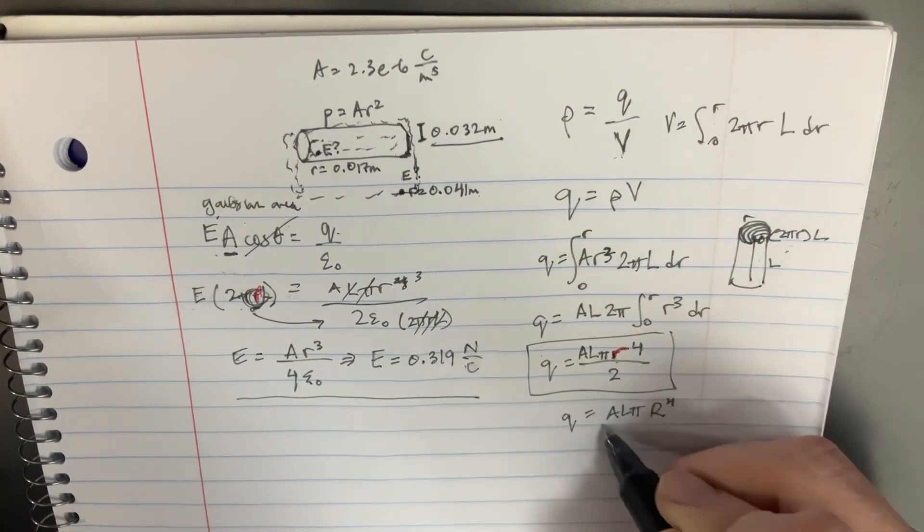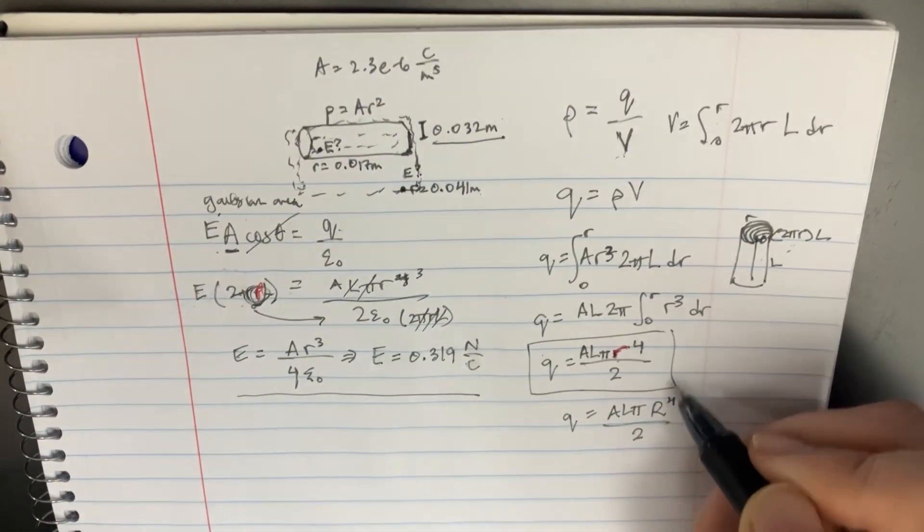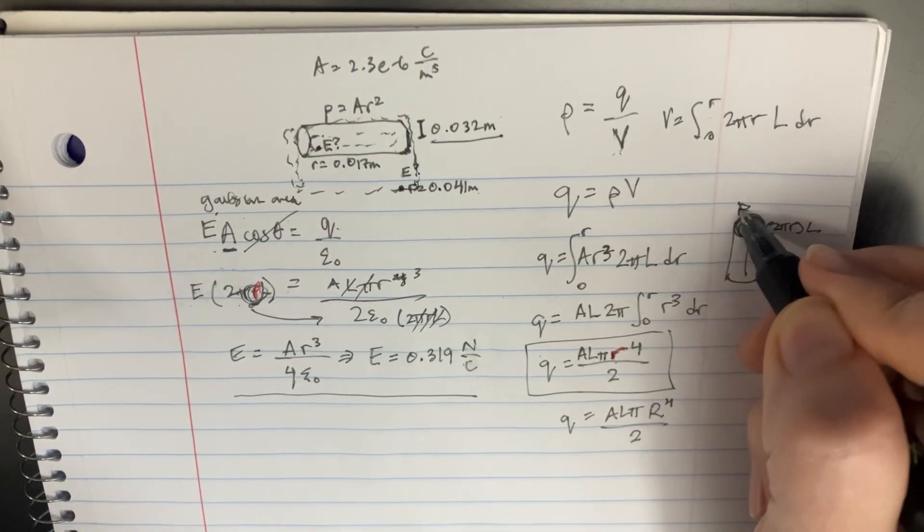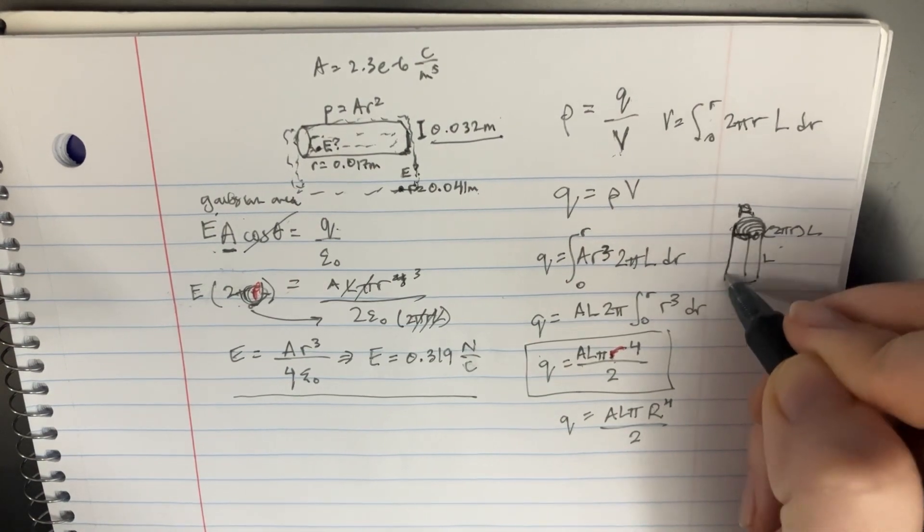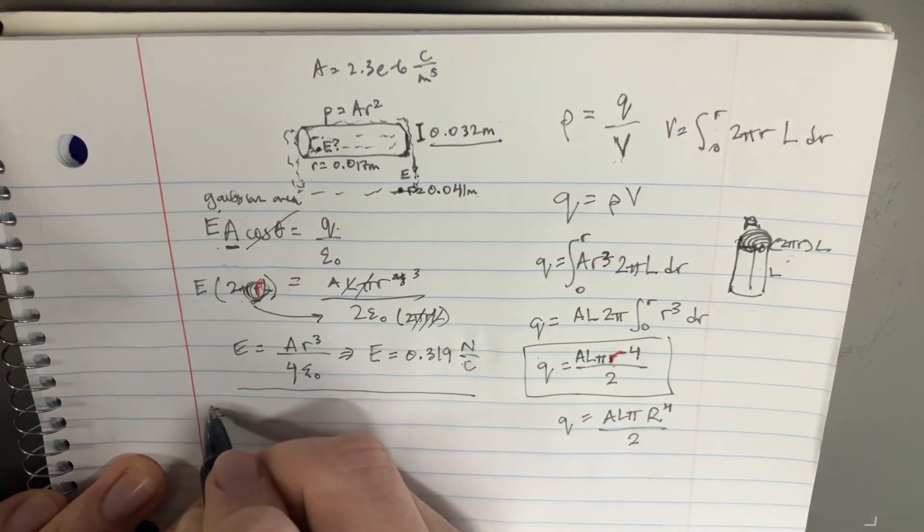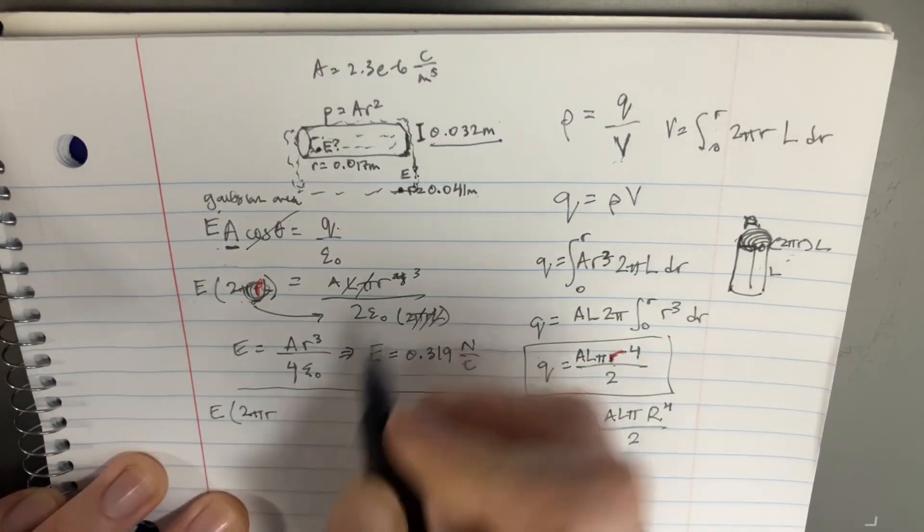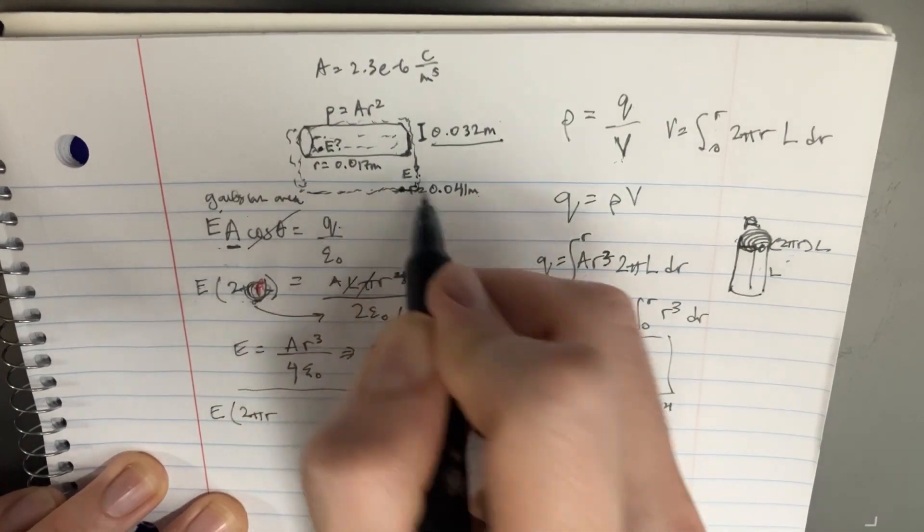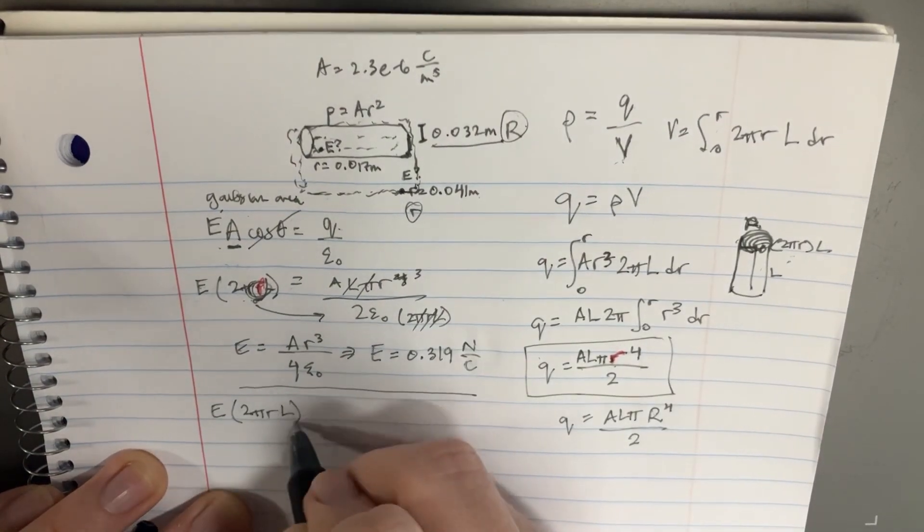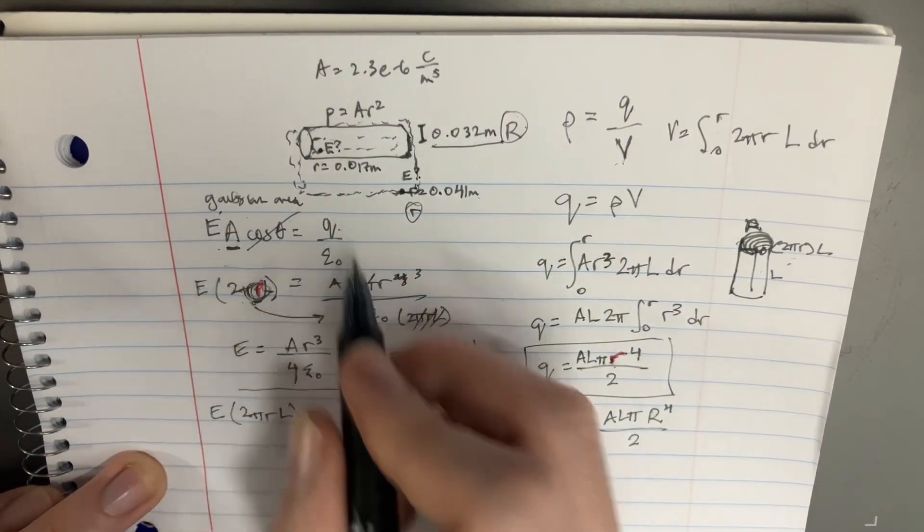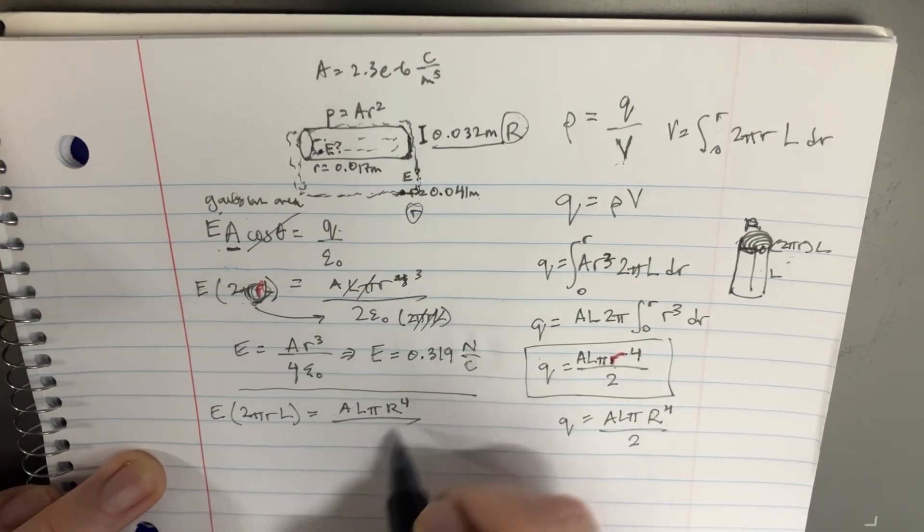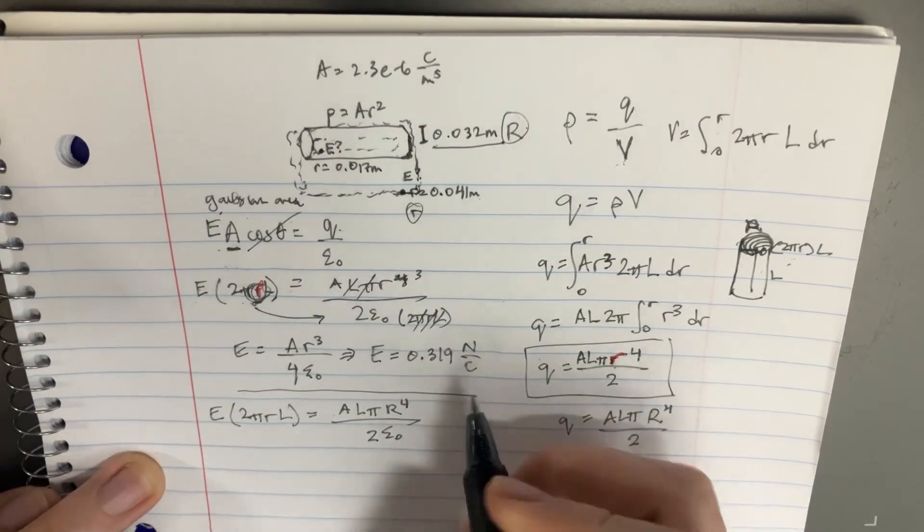So we're going to use capital R divided by two on this side. We would literally do the exact same integral, but this time we're using capital R because that's the maximum radius that we can use for that. And over here, for this new equation, we're going to use the small r because it's now the radius of the Gaussian sphere, which is out here. This is small r. This is capital R. Making sense? Okay, cool. So we got that, and then the epsilon goes away, and then we have A L π R to the fourth divided by two, and then here's epsilon naught. Okay?